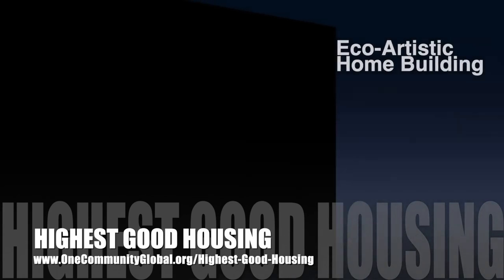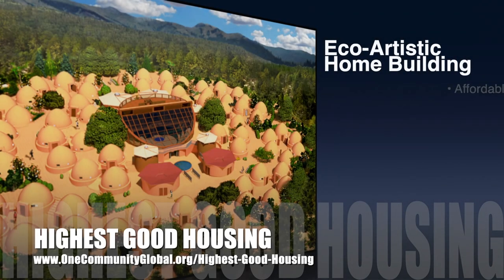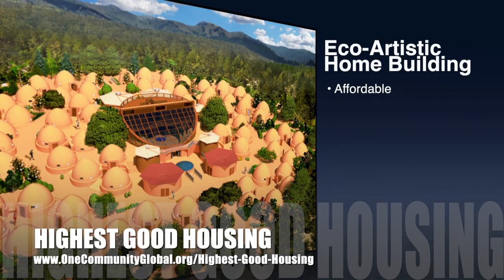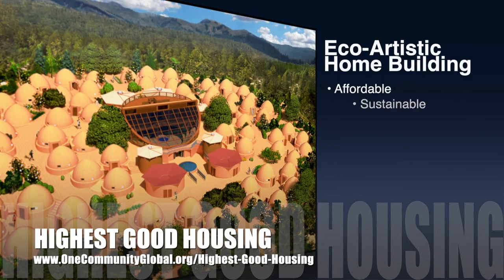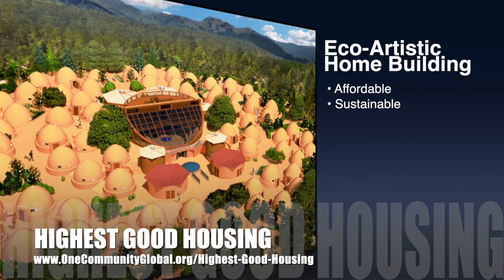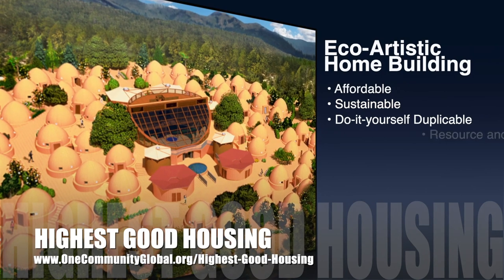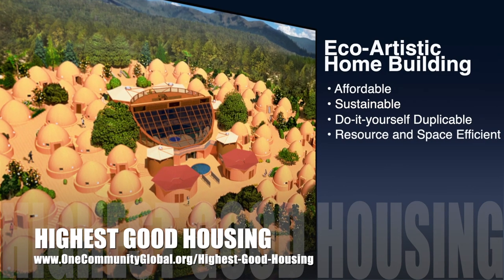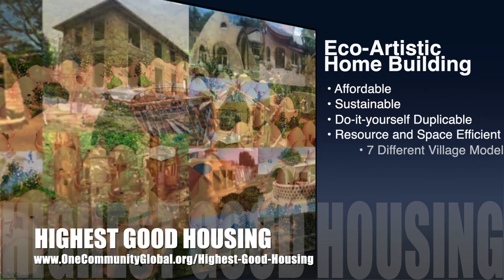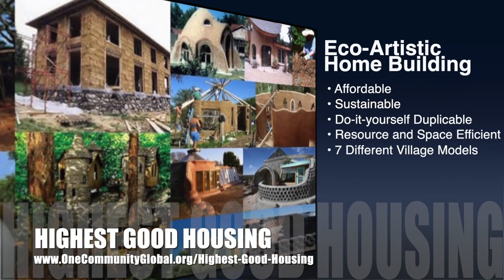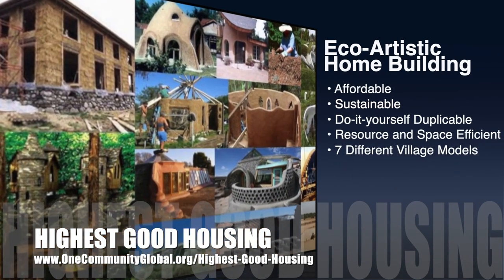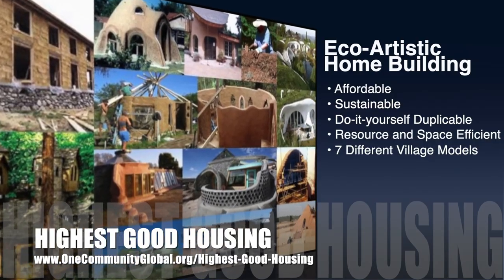The One Community approach to highest good housing is eco-artistic home building that is affordable, sustainable, do-it-yourself duplicable, resource and space efficient, and consists of seven different sustainably constructed village models.